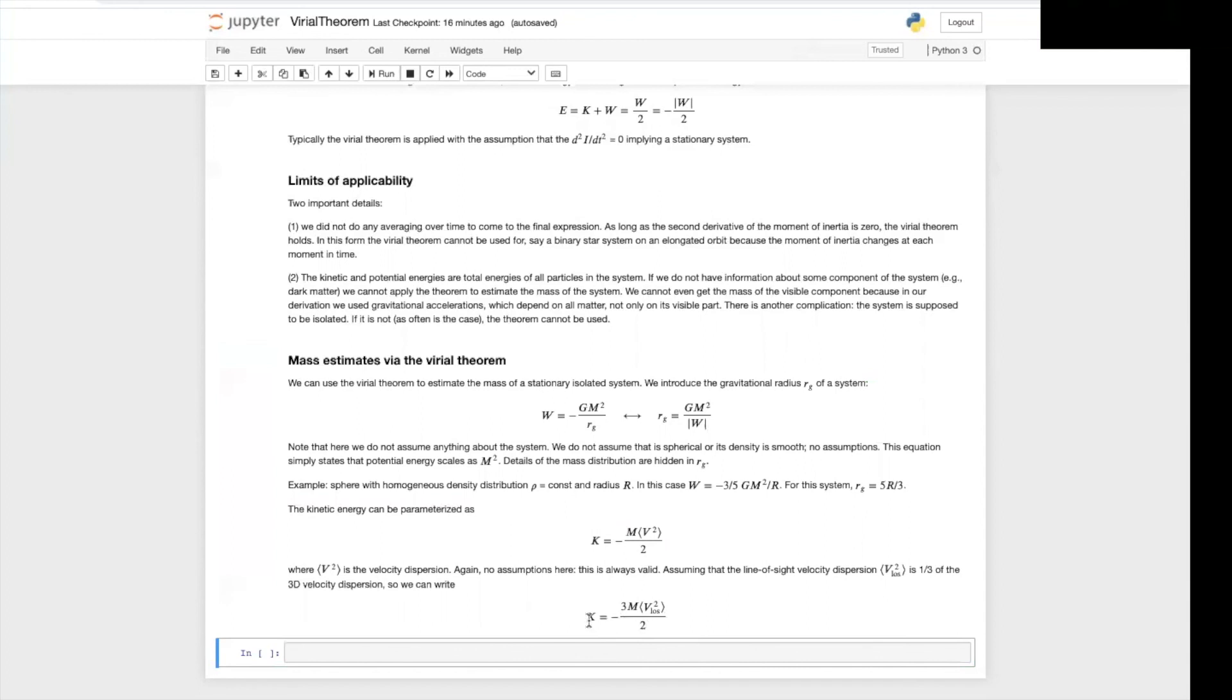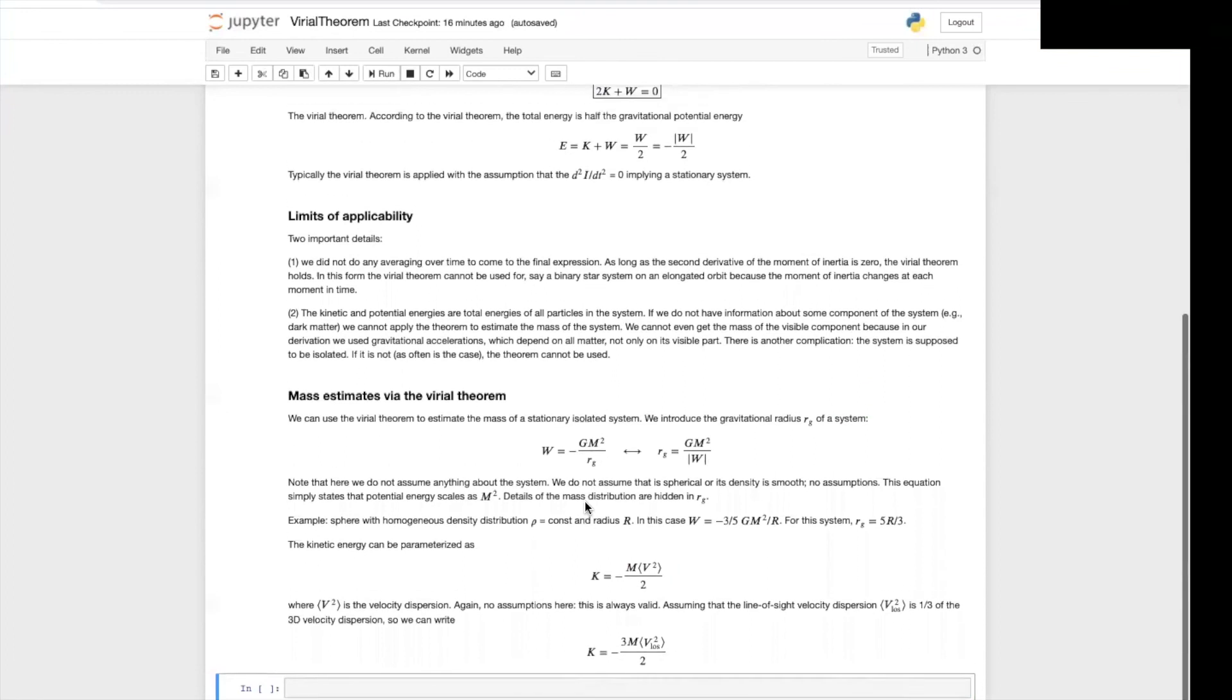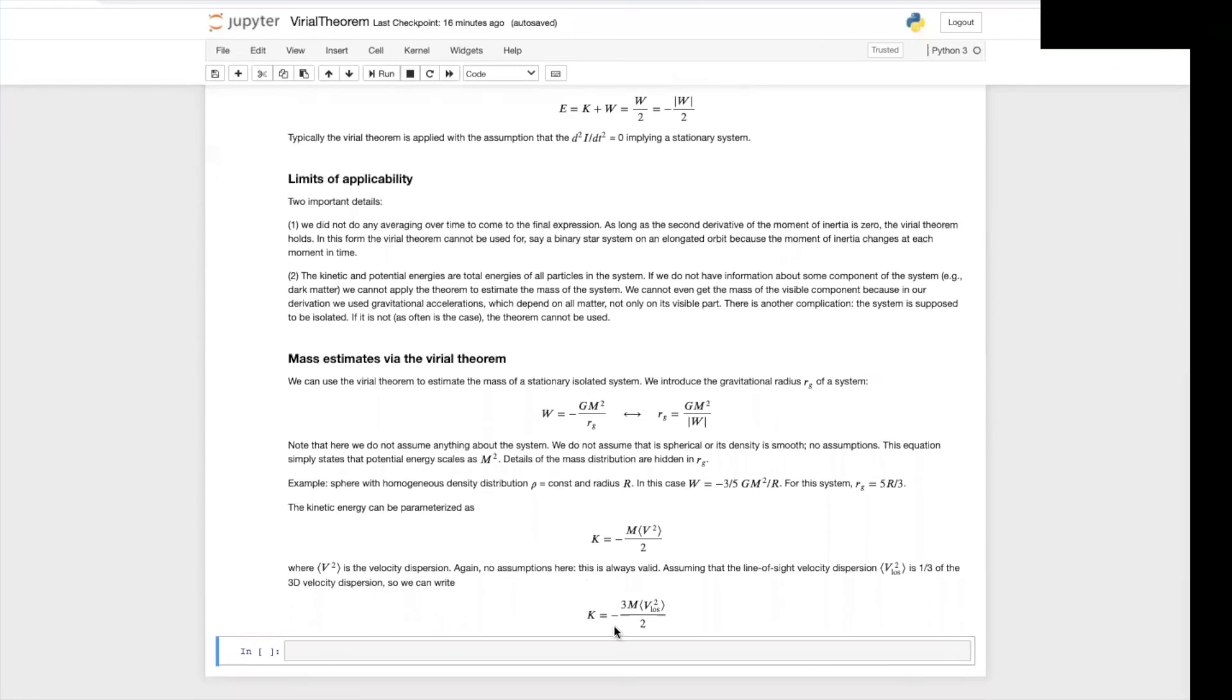Now we can use the Virial theorem, substitute k here by half of the gravitational potential energy, which is given by the gravitational radius, and we then have an estimate of the mass.